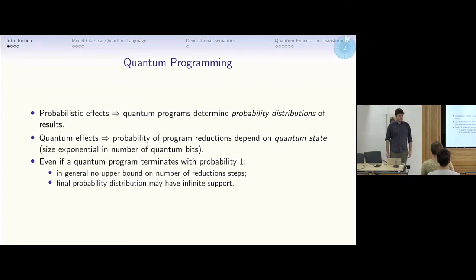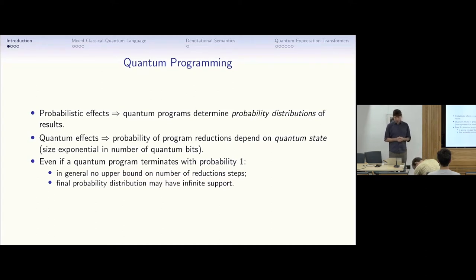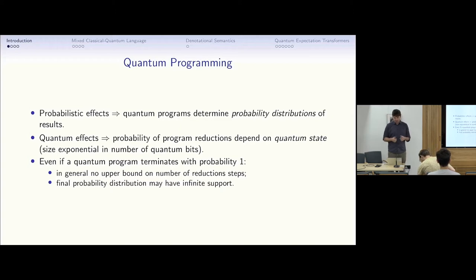The talk is about quantum programming. Things get a bit complicated once we consider some of the effects in place. In particular, in quantum programming, we have probabilistic effects because of the possibility of quantum measurements — the program actually computes a probability distribution of results. We also have quantum effects, which means we also have to carry around a quantum state everywhere so that we can describe the program dynamics.